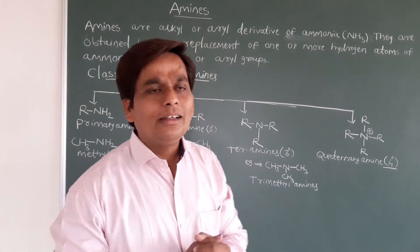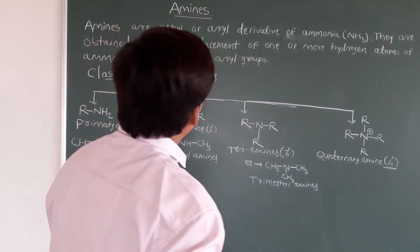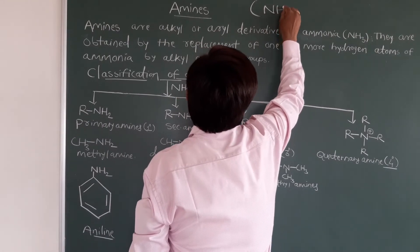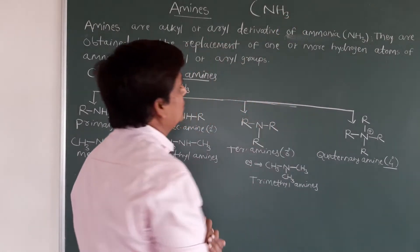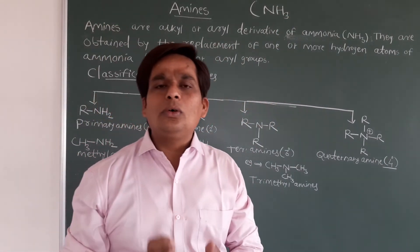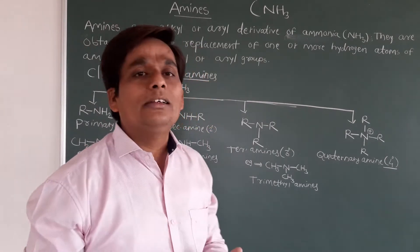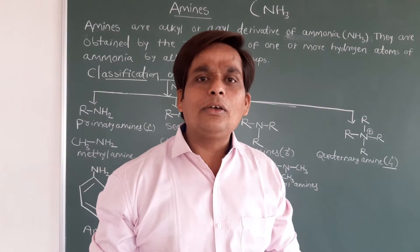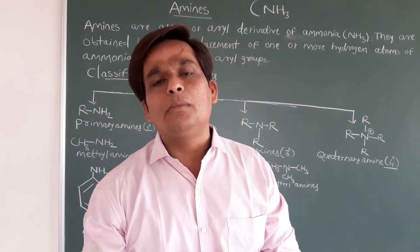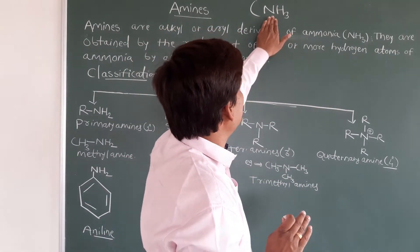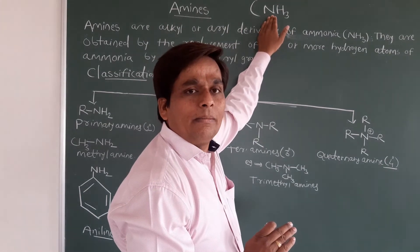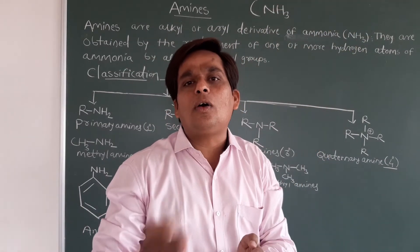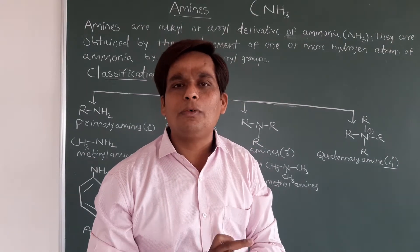You know ammonia — everybody knows the structure of ammonia. Ammonia is nothing but NH3. So amines are nothing but the alkyl or aryl derivatives of ammonia. In NH3, if one or more hydrogen atoms are replaced by an alkyl or aryl group, there is a formation of amines.